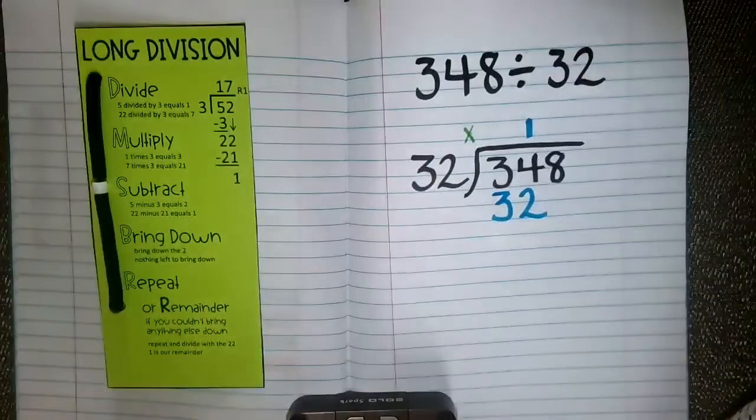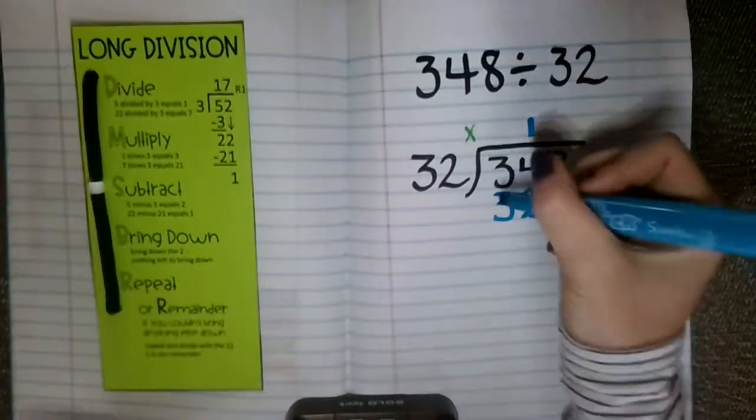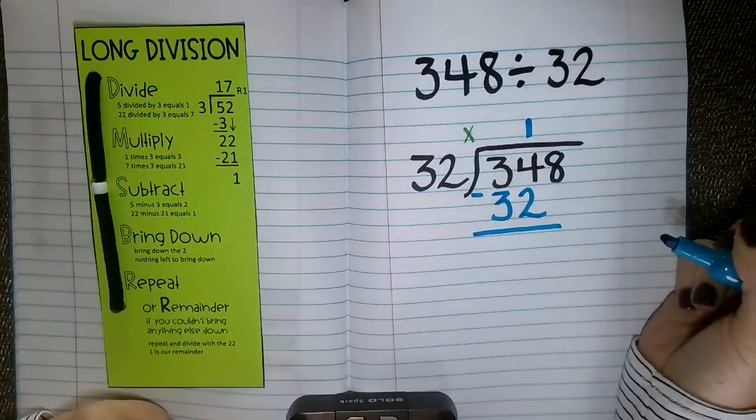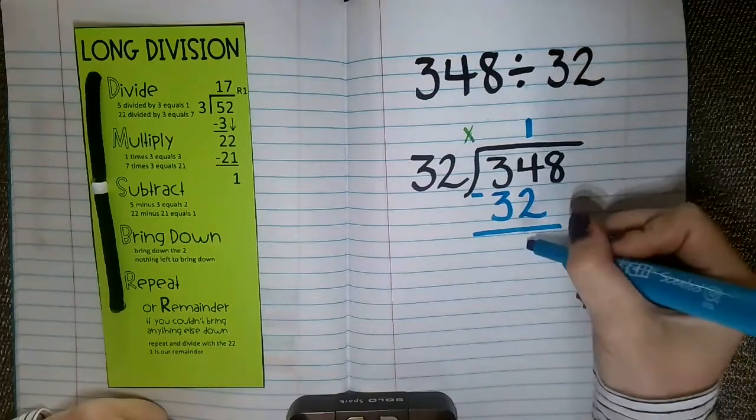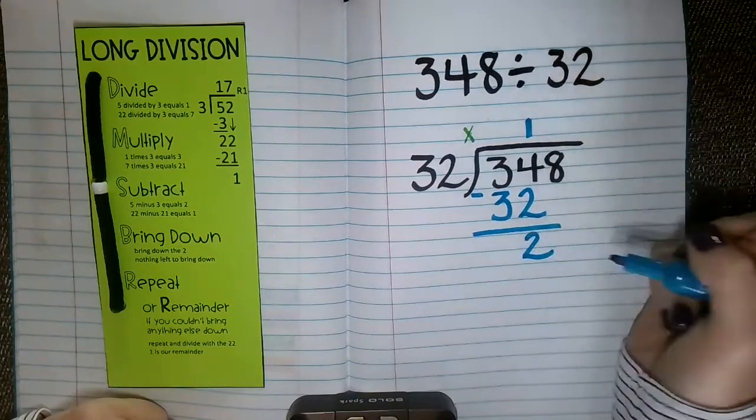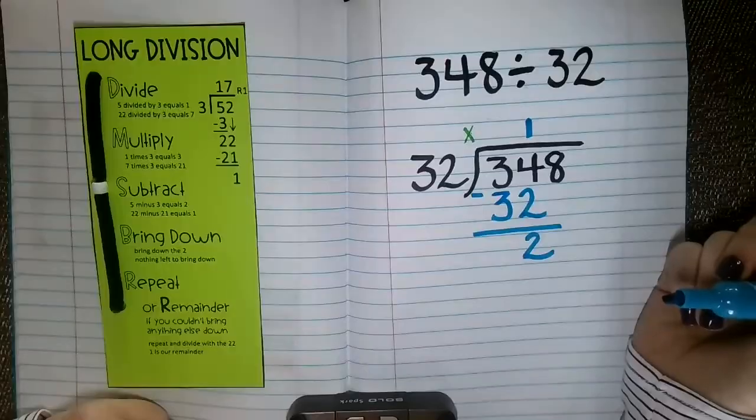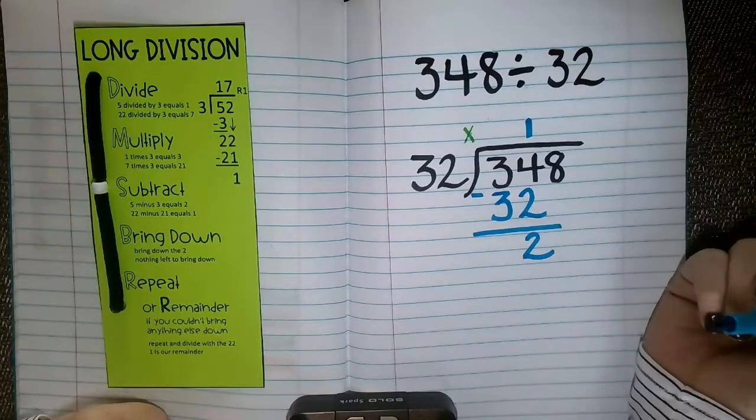So now I just multiplied. I'm going to move to my next step, which is subtraction. So I am going to subtract 34 minus 32. I know that 4 minus 2 is 2. And I know that 3 minus 3 is nothing.